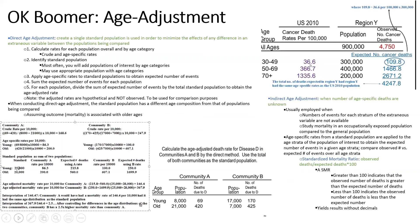Another important thing when looking at statistics is age adjustment, because older people are more likely to get sick. It isn't fair to compare a very young population with a very old population and call the young one healthier. Direct age adjustment compares population X and population Y by creating a standard population — usually the sum of both — then calculating rates, applying age-specific rates, summing expected events, and dividing by the total to get an age-adjusted rate.